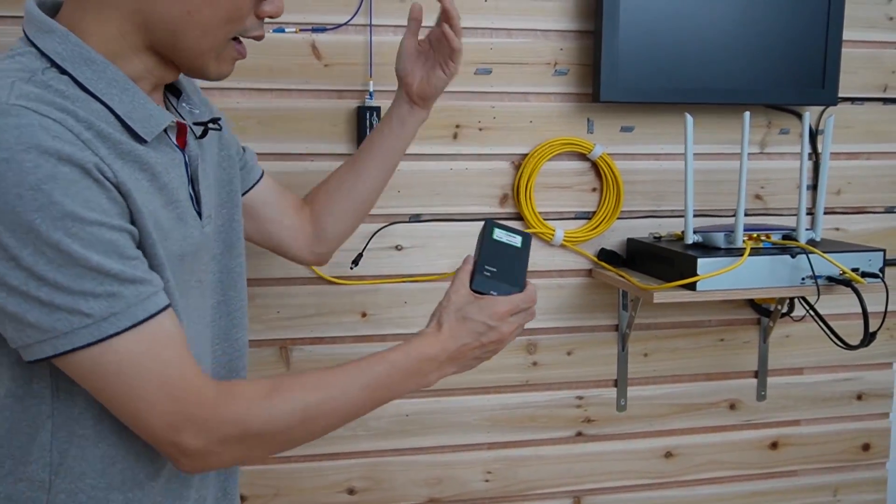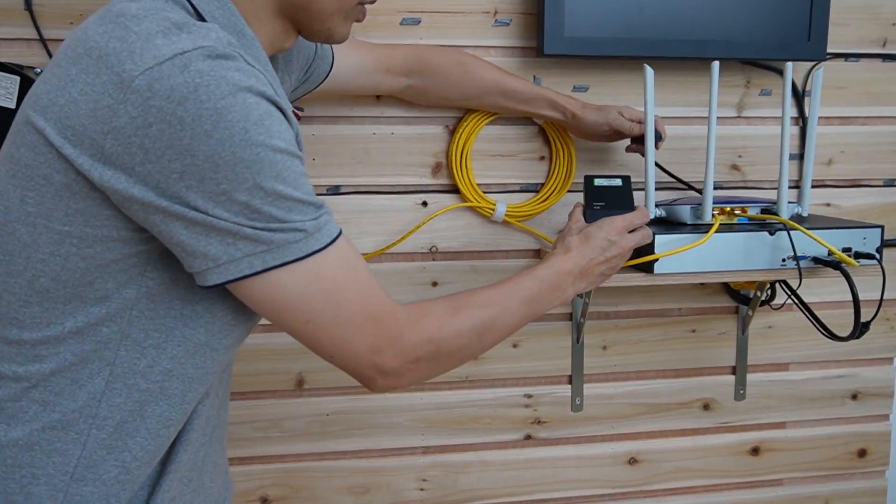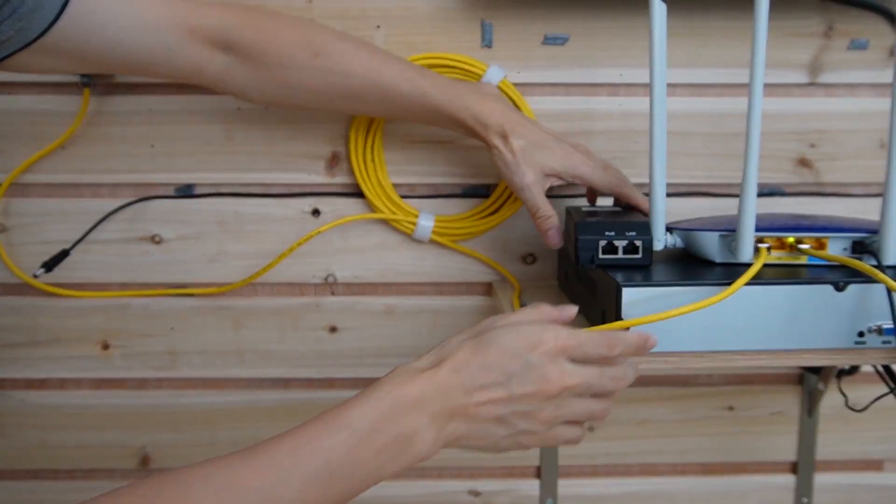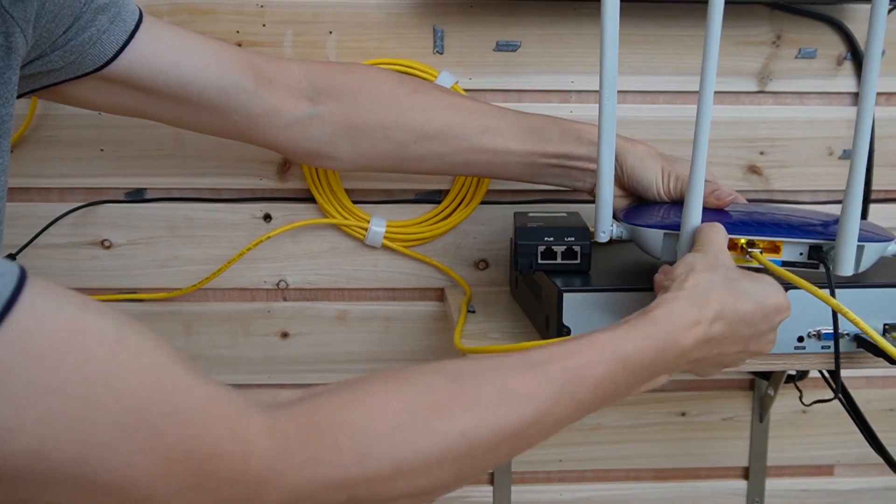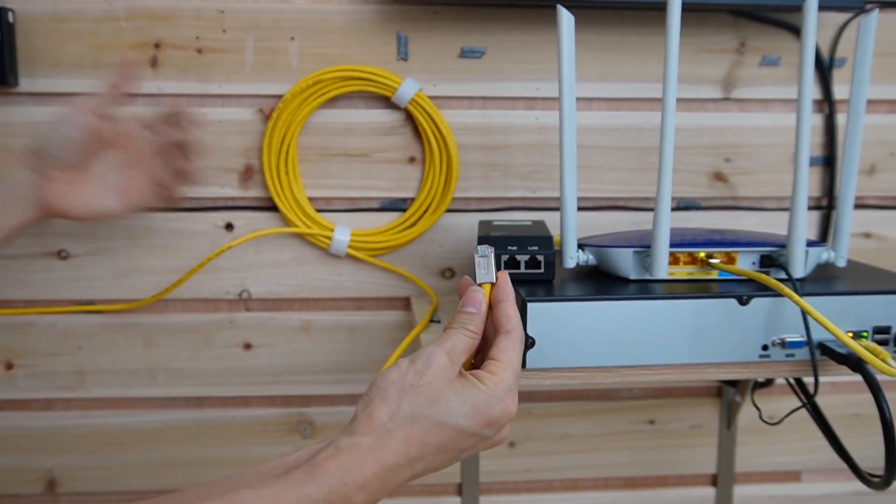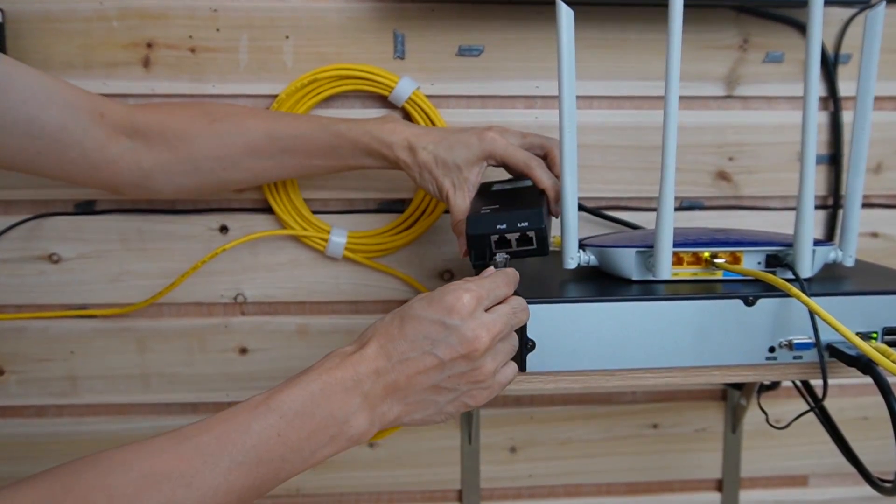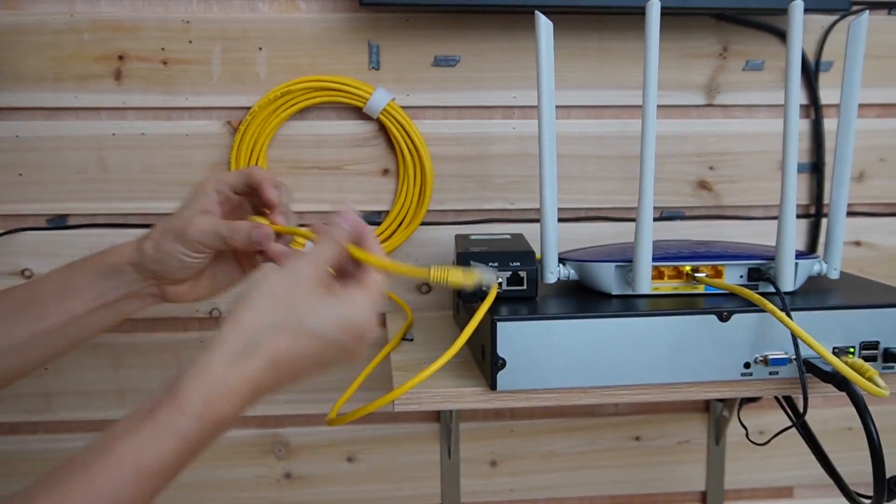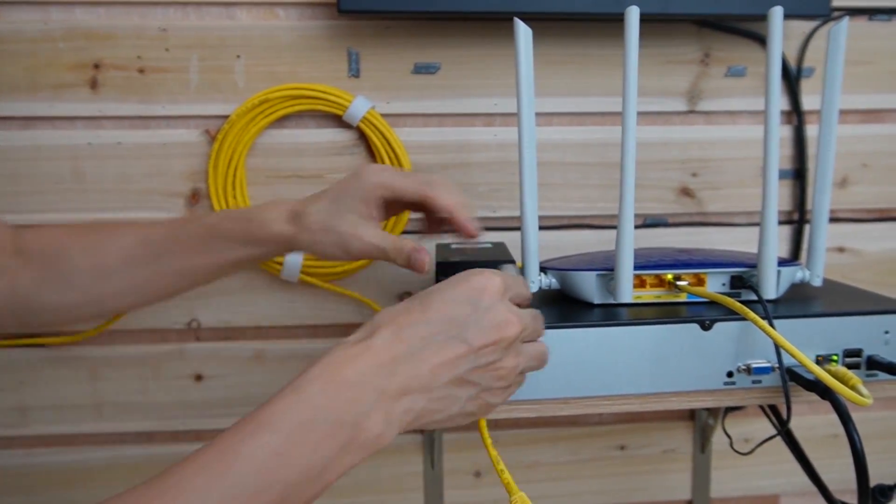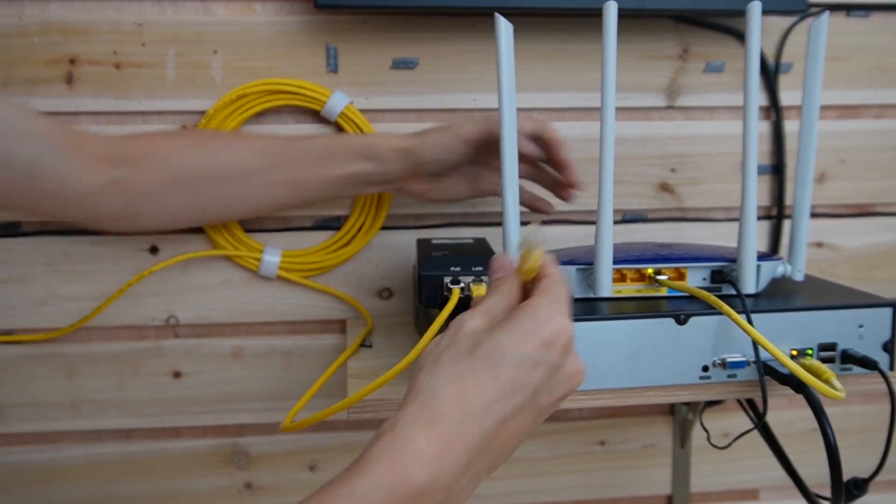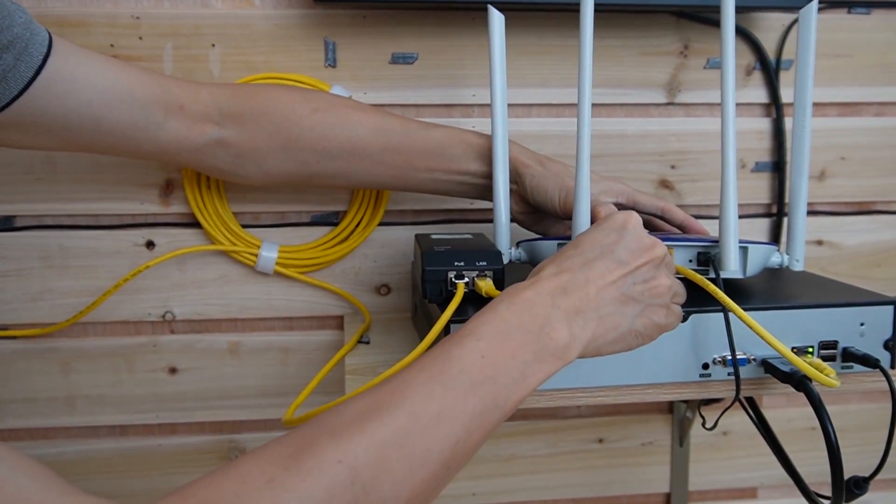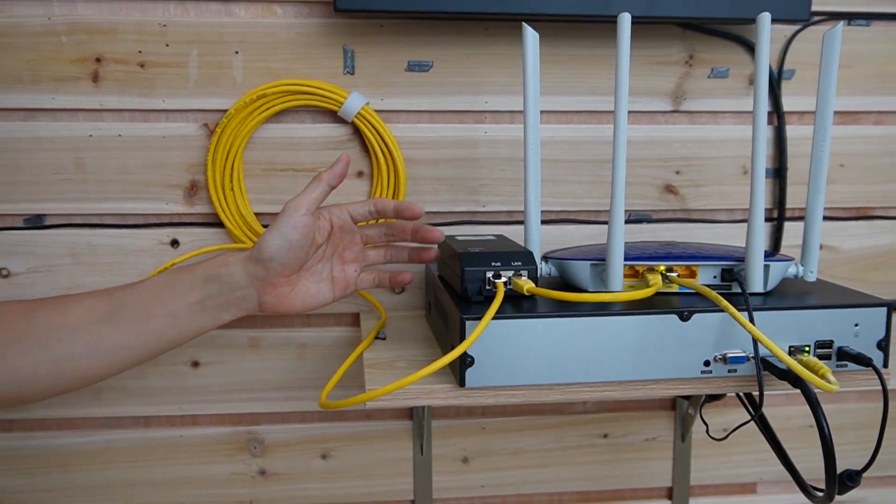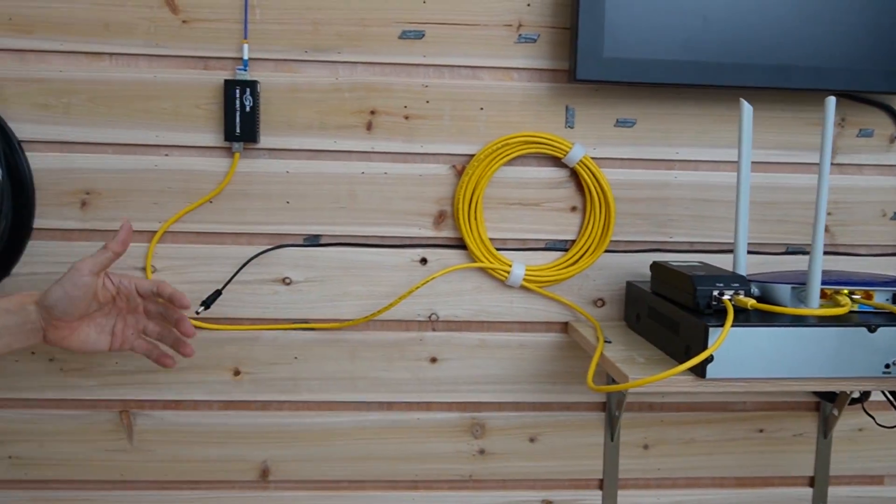First, let's power this PoE injector. And then we need to remove this cable. This is the cable linking to the media converter. Now let me just remove and connect to the PoE port. From here, we need another short patch cord to link the LAN port. This is the LAN port to one of the data ports on the router. So we got the data back. Okay, now let's just move to the media converter.